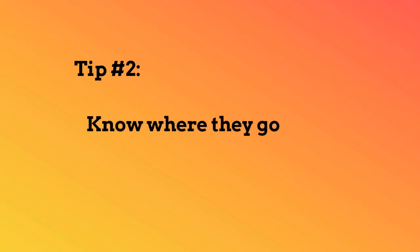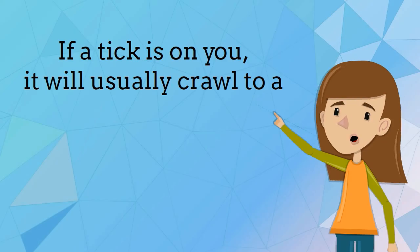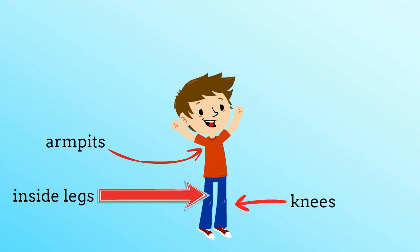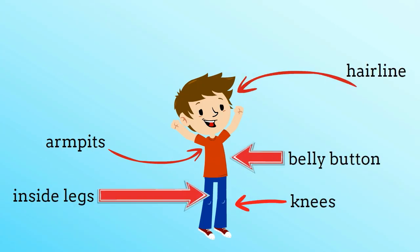Know where they go. If a tick is on you, it will usually crawl to a dark warm place like your armpits, the inside of your legs, back of your knees, hairline, and even your belly button.